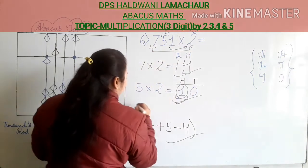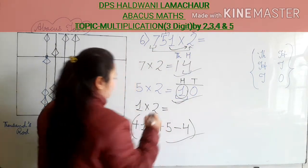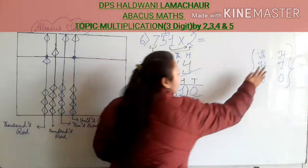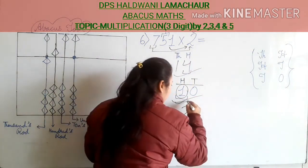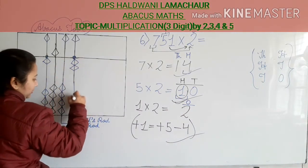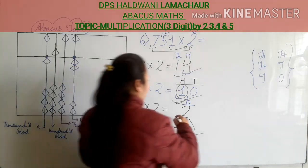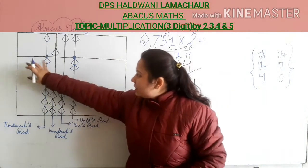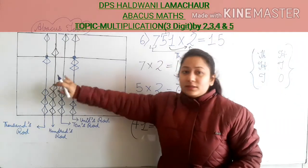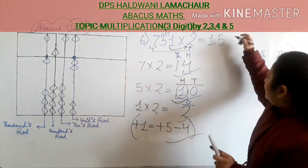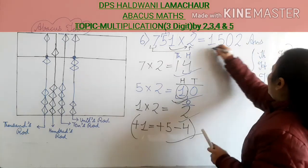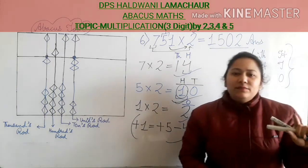Now the last digit: multiply 1 with 2, that's 2. It is a single digit number, so you will not apply the zero rule — put only in units rod. Put 2 beads up in units rod. Now count: thousands has 1, hundreds — only 5, tens has nothing which means 0, and units has 2. So your answer is 1502.